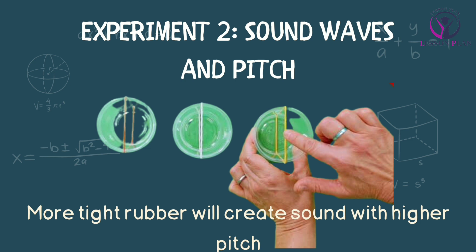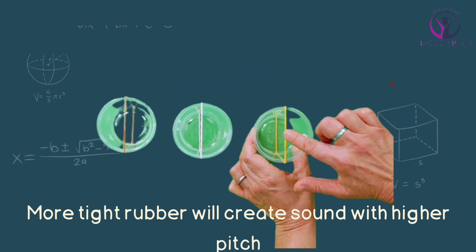Next, tighten the rubber band and pluck it again. You should hear that the sound has become higher in pitch. This is because tightening the rubber band changes its frequency, which in turn changes the frequency of the sound waves it produces.